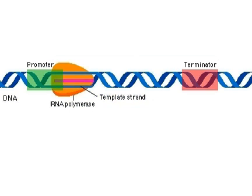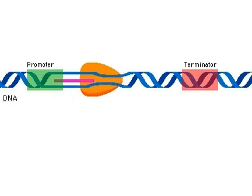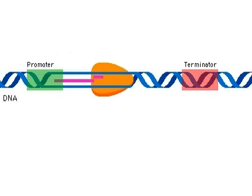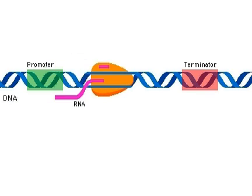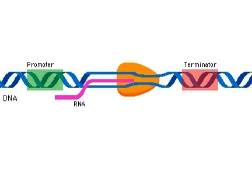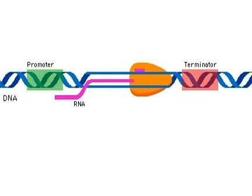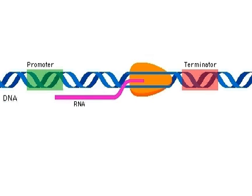The second stage of transcription is elongation. RNA polymerase moves along the DNA, adding nucleotides to the end of the growing RNA molecule. The RNA strand peels away, allowing the two separated DNA strands to come back together.